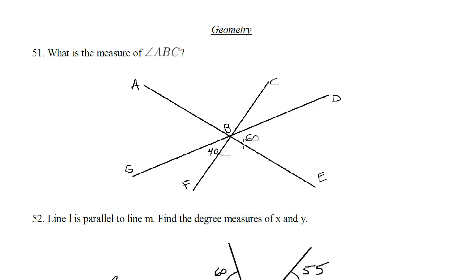So if 40 plus 60 is 100, that must mean 80 is left for this angle. And since this angle is across from ABC, they're vertical angles, ABC must also be 80.